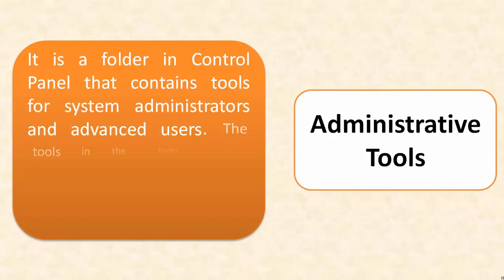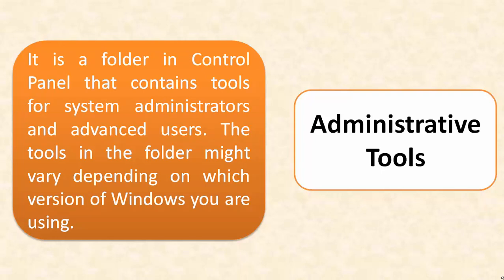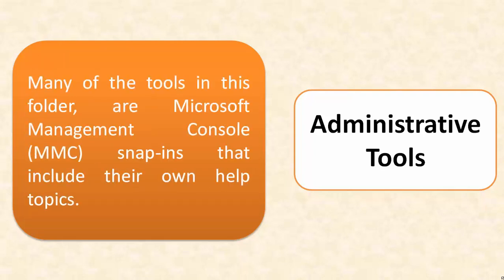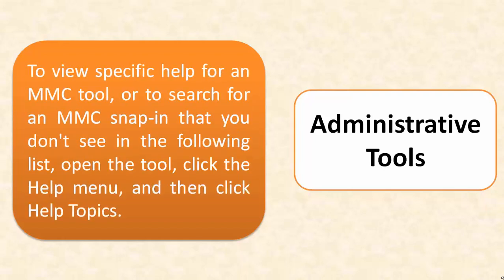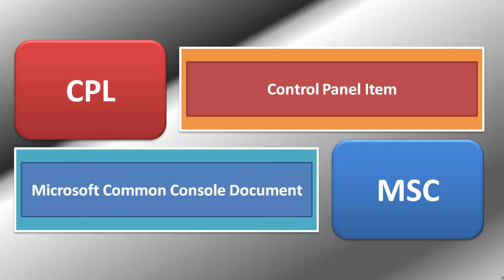Administrative Tools. It is a folder in Control Panel that contains tools for system administrators and advanced users. The tools in the folder might vary depending on which version of Windows you are using. Many of the tools in this folder are Microsoft Management Console Snap-ins that include their own help topics. To view specific help for an MMC tool or to search for an MMC snap-in that you don't see in the following list, open the tool, click the Help menu, and then click Help Topics. CPL is a file extension designed for Control Panel items, while MSC is designed for Microsoft Common Console documents.